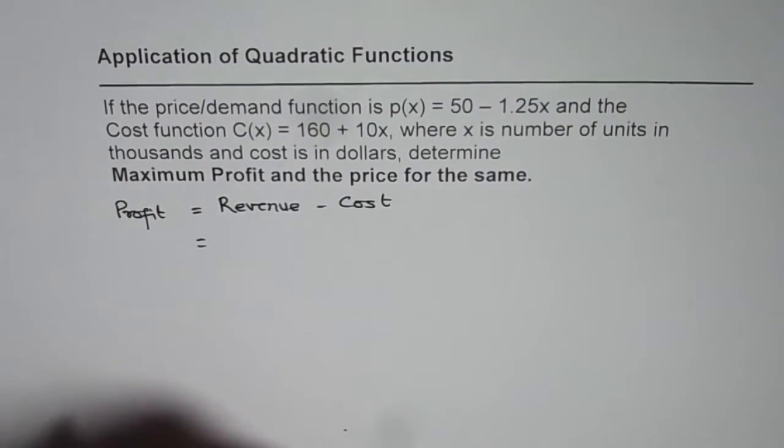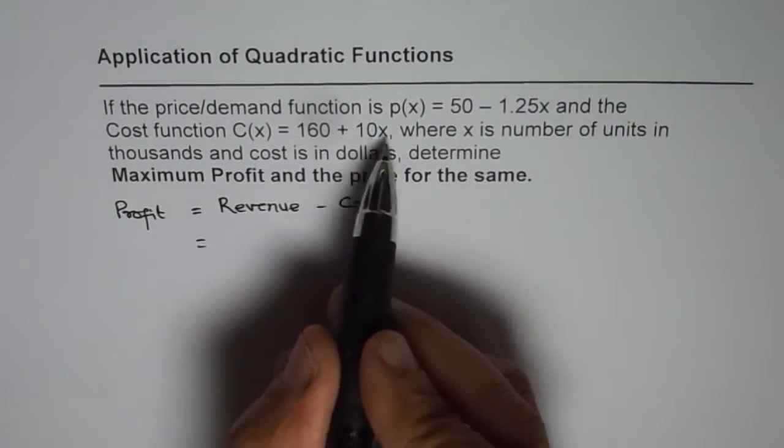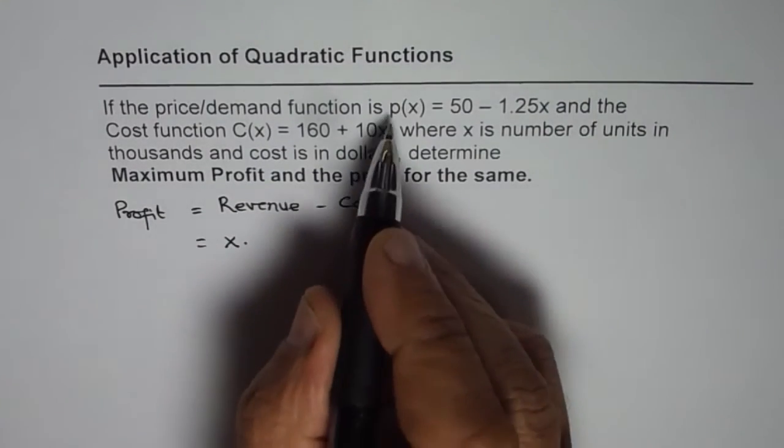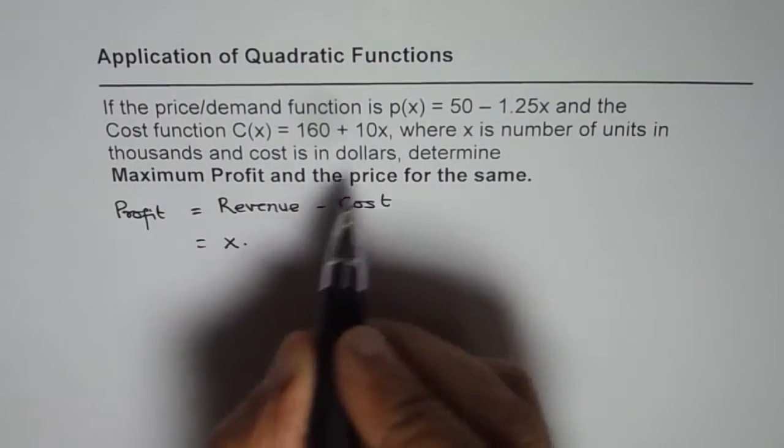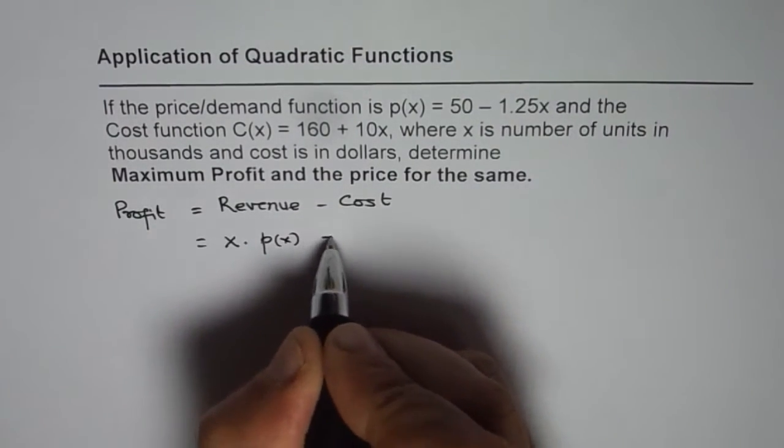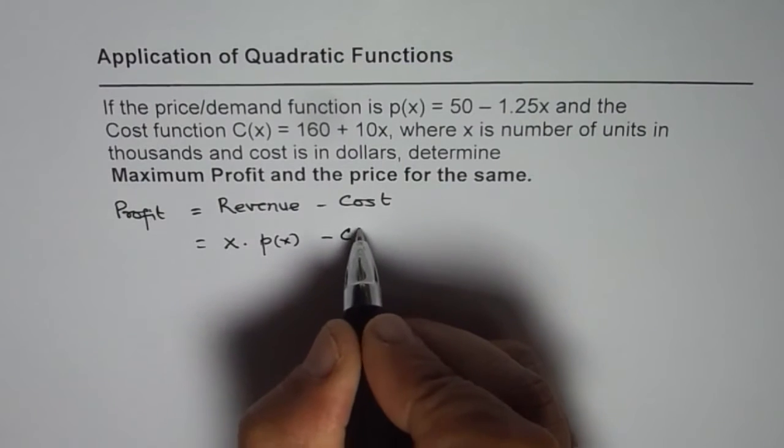Now what is revenue? Revenue is number of items times the demand for items. So number of items is x, demand is P of x. So P of x for us is, let me write first P of x minus the cost is given to us as C of x.